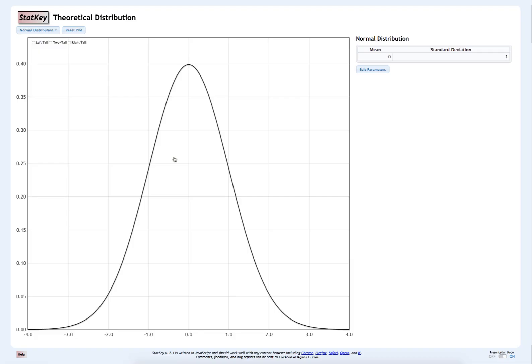The default is to construct a Z distribution. This is a normal distribution with a mean of 0 and standard deviation of 1.